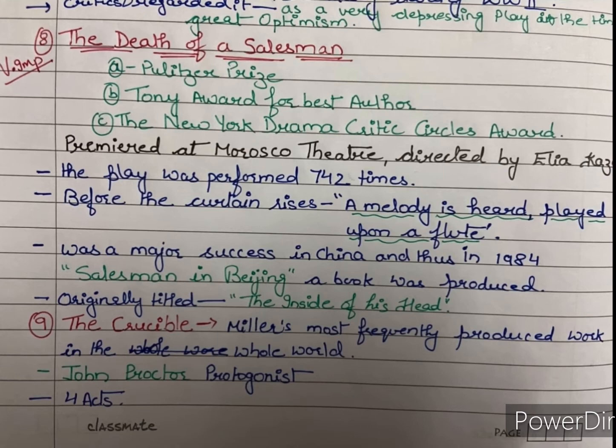Ninth work is The Crucible — Miller's most frequently produced work in the whole world. Poore world mein joh work baar baar produce kiya gaya, wo hai The Crucible. The protagonist was John Proctor, and the play was written in four acts. Yaha protagonist ka name dhyan rakhiye — John Proctor — and the play was written in four acts.